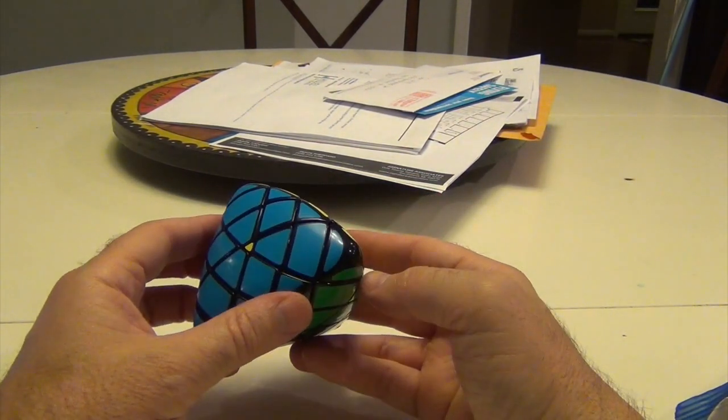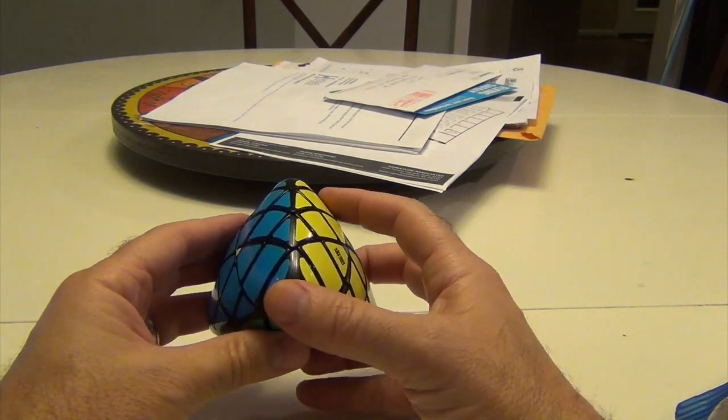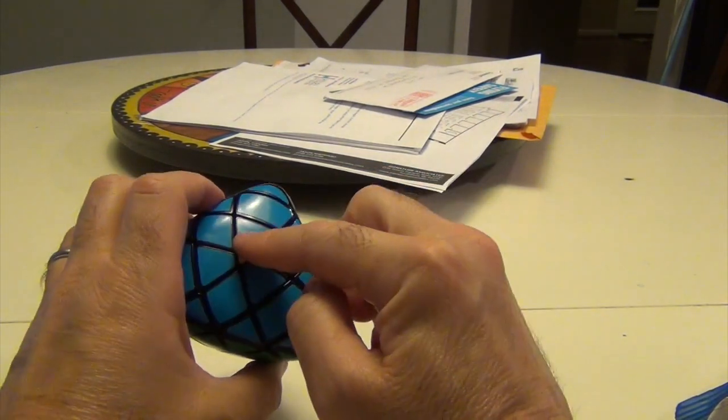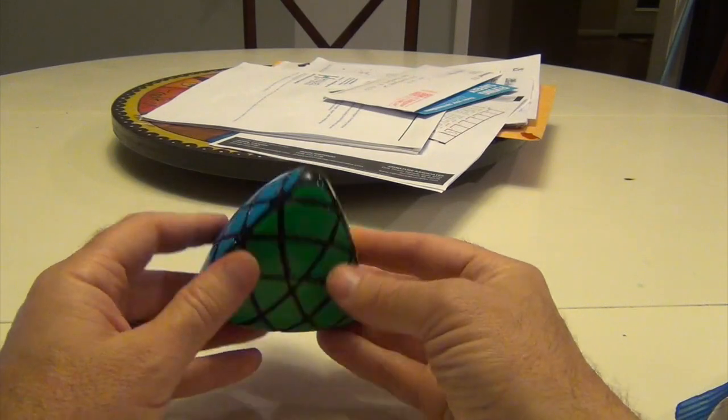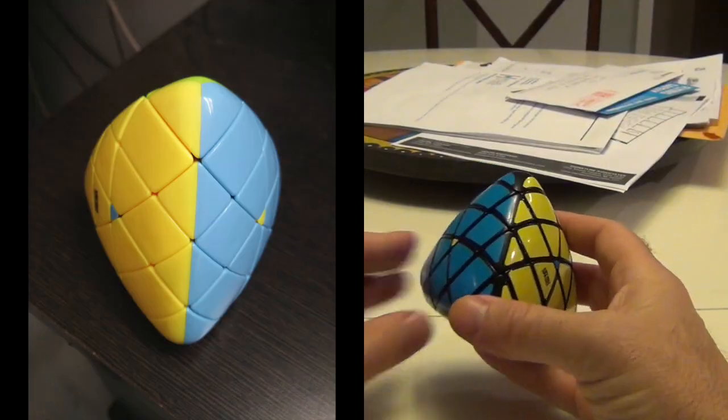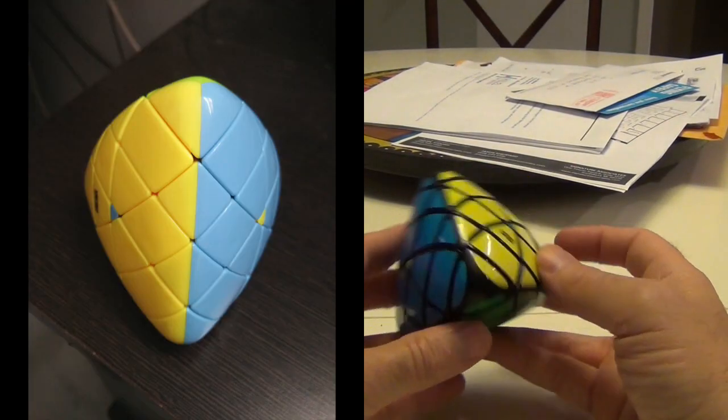So, as you can see, he's so close, so close to finishing, except he's got two corners that apparently need to be swapped. Everything else looks okay, but as you can see, there's two corners here.